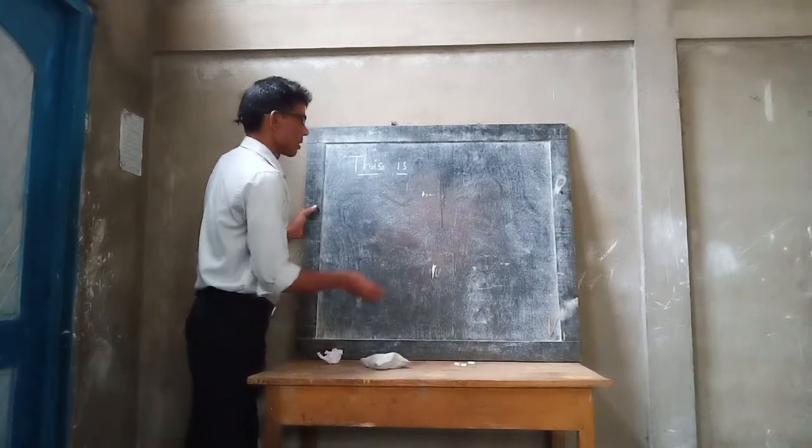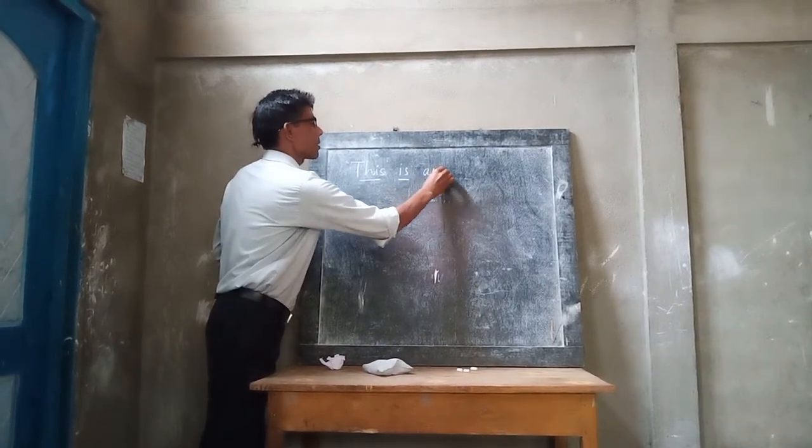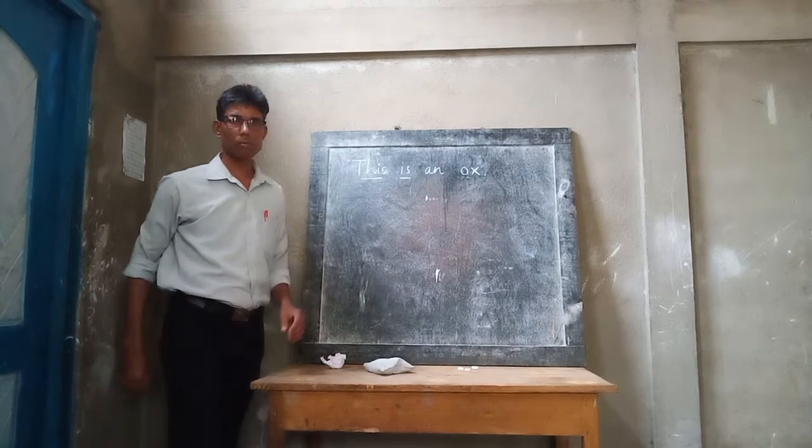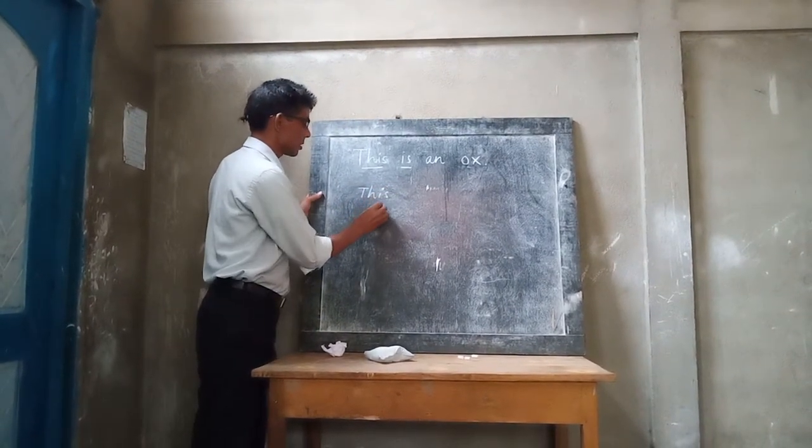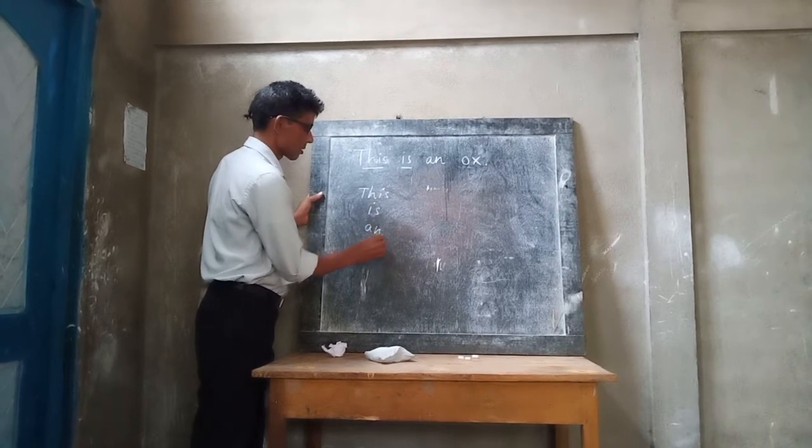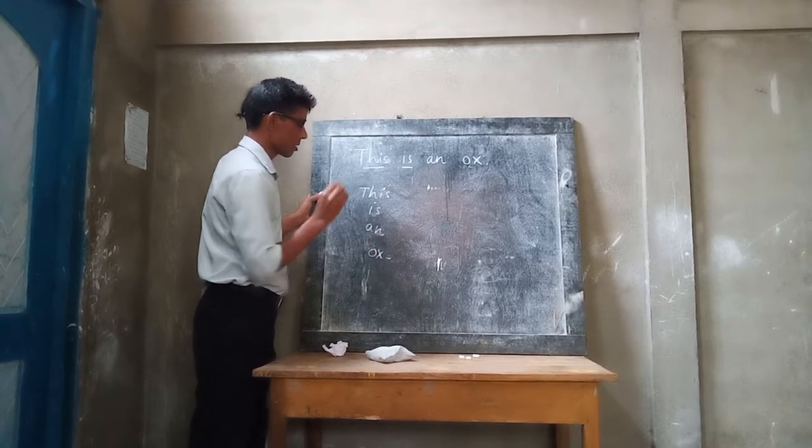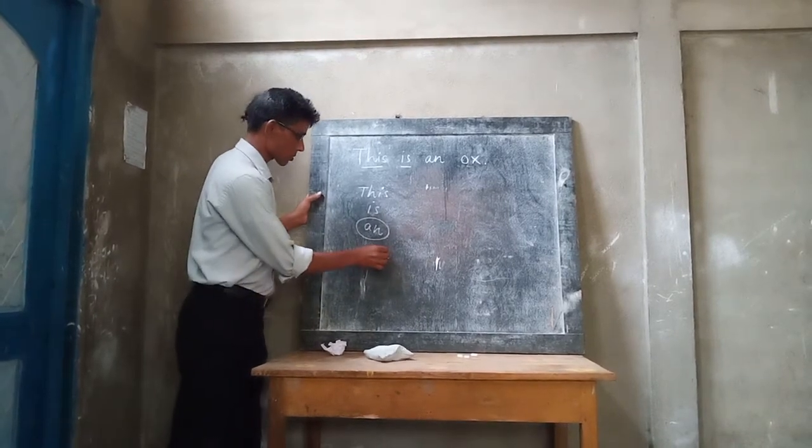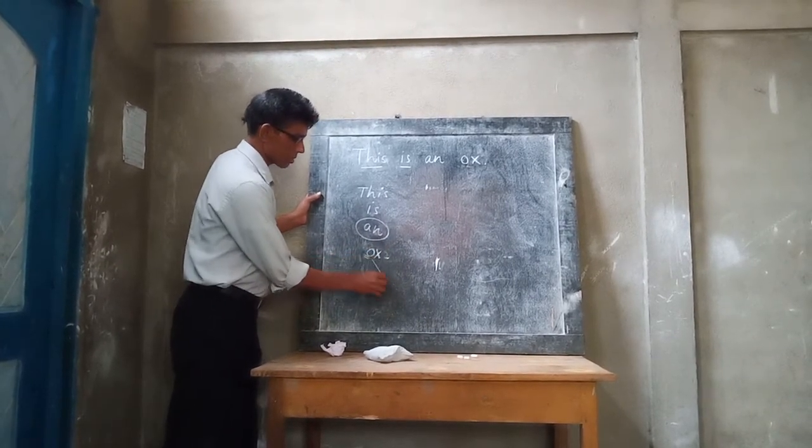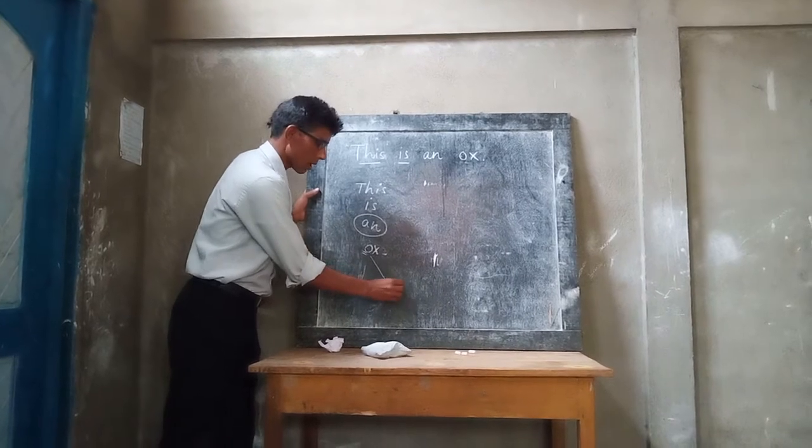This is an ox. This is an ox. An. Before ox, O is vowel and sound is also vowel.